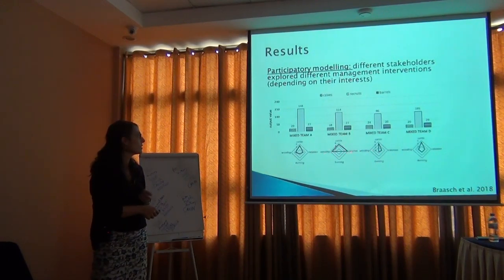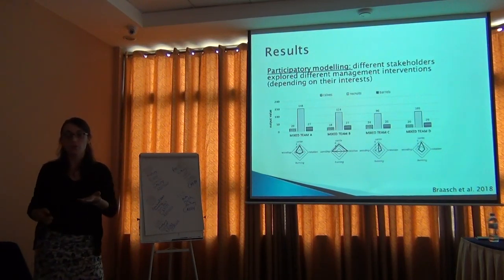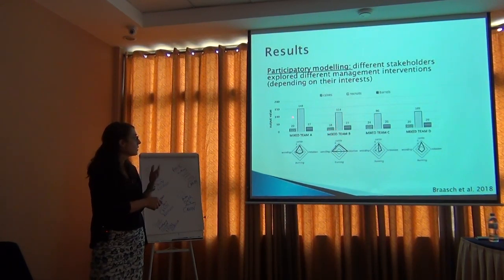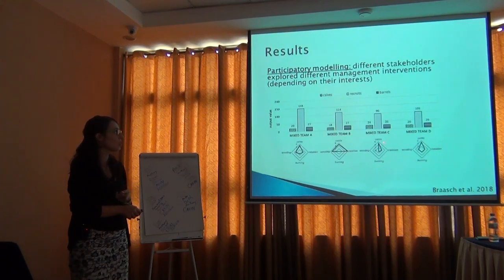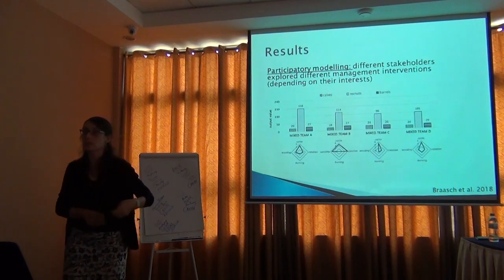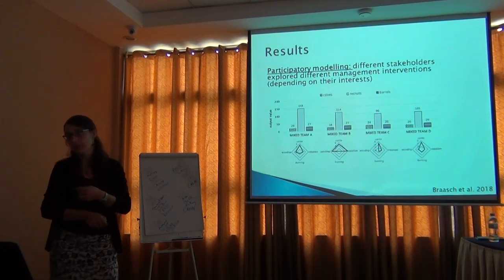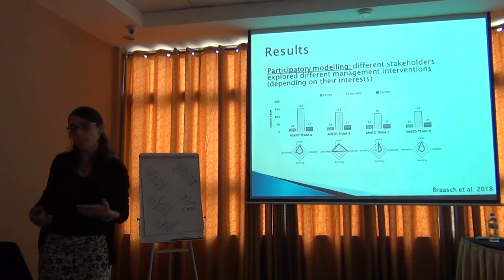For example, one group decided on many interventions — cattle, weeding to remove invasive grasses, and rotation so pines can grow before cows trample them. They got about 27 barrels of resin, a certain number of pine recruits, and a number of calves. Comparing with a simpler intervention — just cattle and rotation without weeding — the results weren't very different, and it might be cheaper since weeding requires a lot of human labor. So maybe doing less is a good compromise: nearly the same benefits at a much lower cost. Modeling can help us discuss potential management interventions and how we may benefit from them.